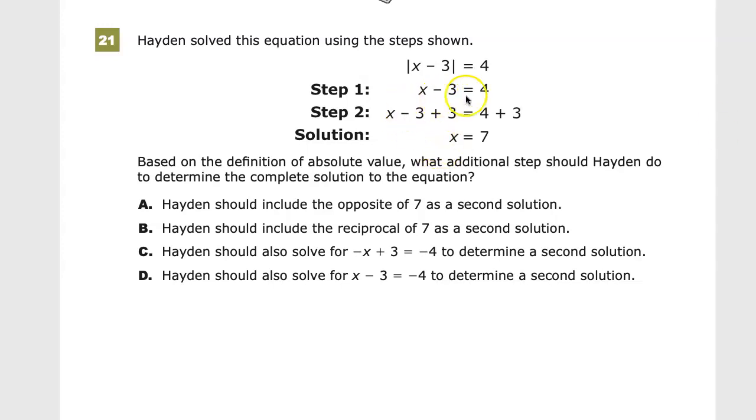For step 1, he said x minus 3 is equal to 4. For step 2, he eliminated the minus 3 by adding 3 to both sides, and he came up with the solution of x is equal to 7.